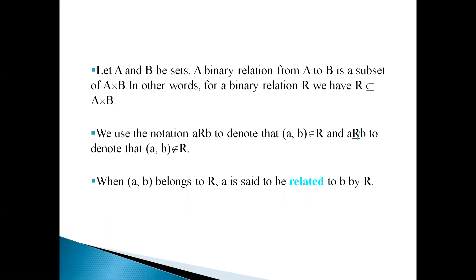Suppose we have two different sets A and B — since we have two sets, it is a binary relation. The binary relation from A to B is a subset of the Cartesian product of A and B. In other words, we represent the relation R as a subset of the Cartesian product of A and B. We use the notation A R B to denote that A and B are elements of the relation R.